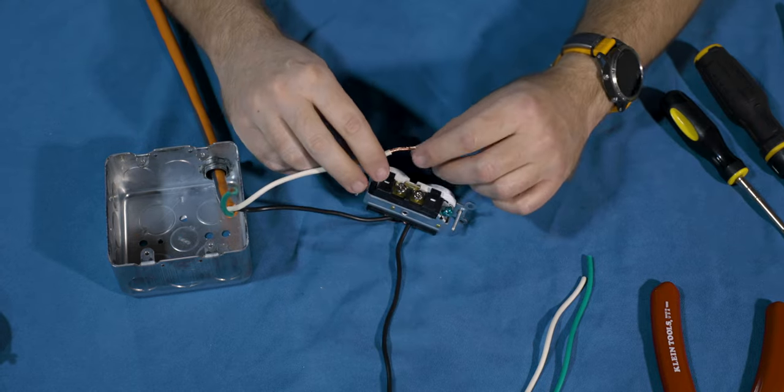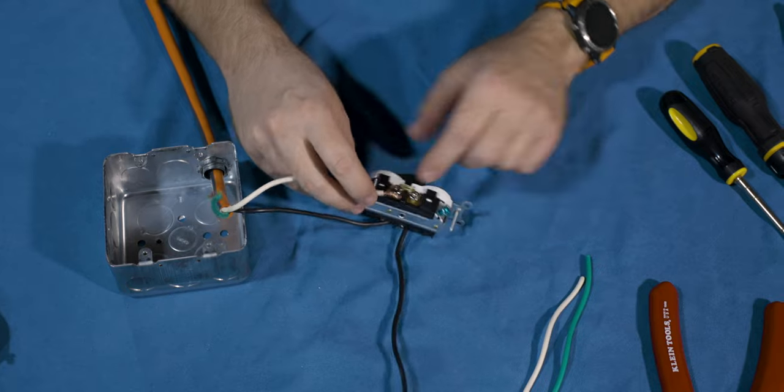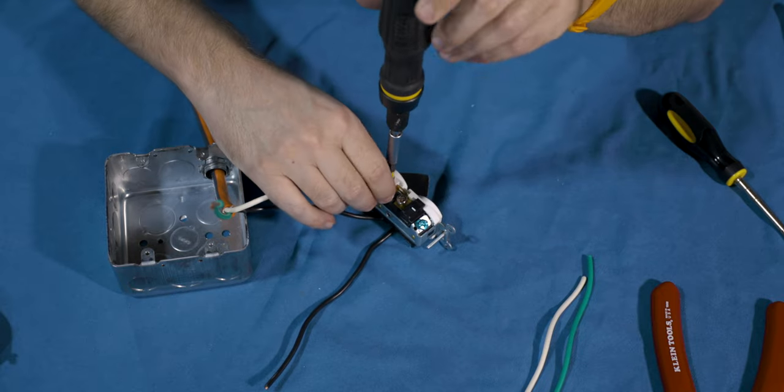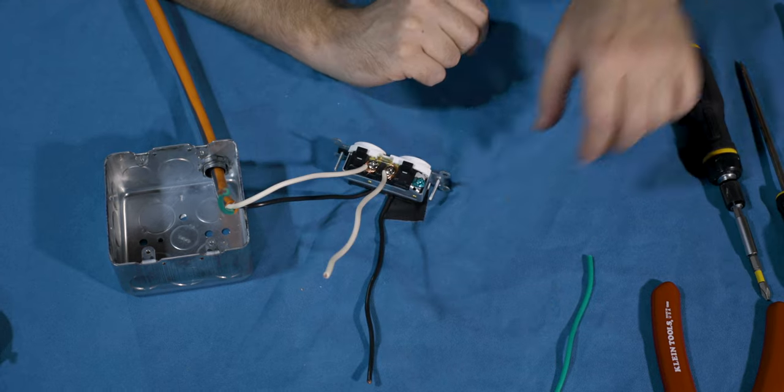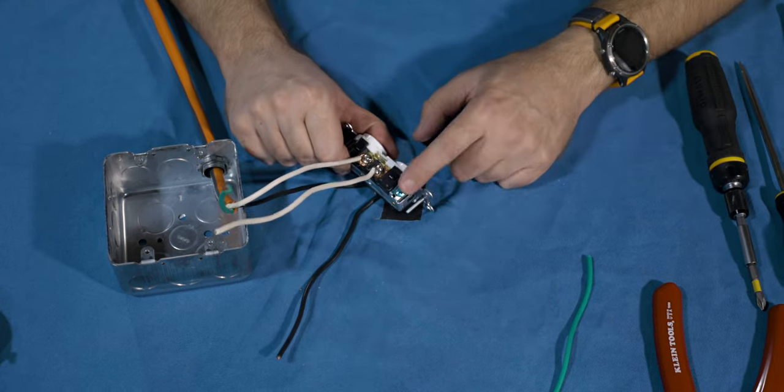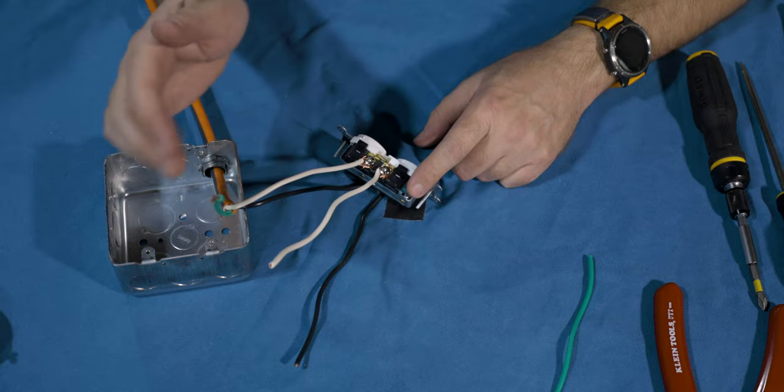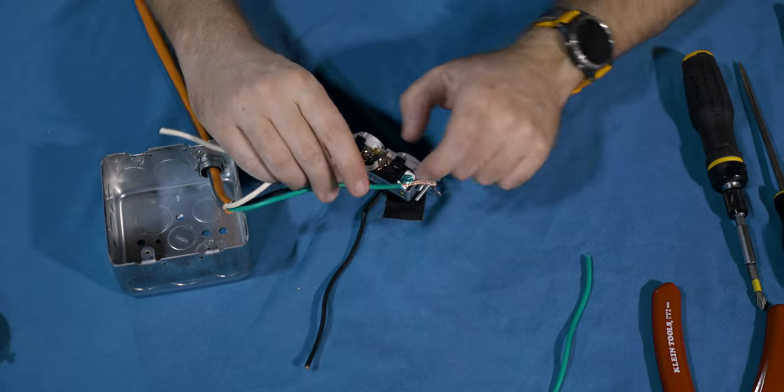The white goes to the silver ones. Screw it down. And then the other one here, screw it down. Just like so. And then we've got this green one here, which goes to the green wire.